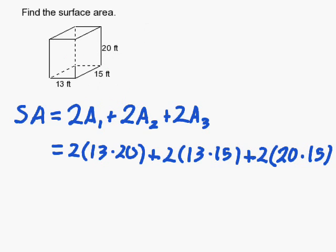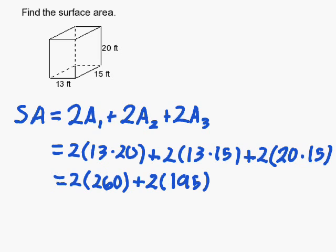Now, if we go ahead and finish this, we get two times two hundred sixty, plus two times one hundred ninety-five, plus two times three hundred.